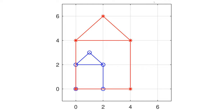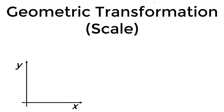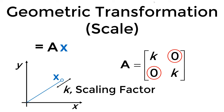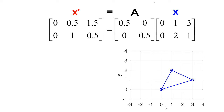For our next example, we can double the image size. To understand how to increase the image size using the transformation matrix, we will go over 2D image scaling. We have a point x in the 2D domain. For image scaling, the transformation matrix A is given as a scaling parameter k in the diagonal elements and 0 in the off-diagonal elements. If k is larger than 1, the point x will be stretched; if k is smaller than 1, it will shrink. Once you multiply matrix A by column vector x, you get x prime, which represents the scaled image.